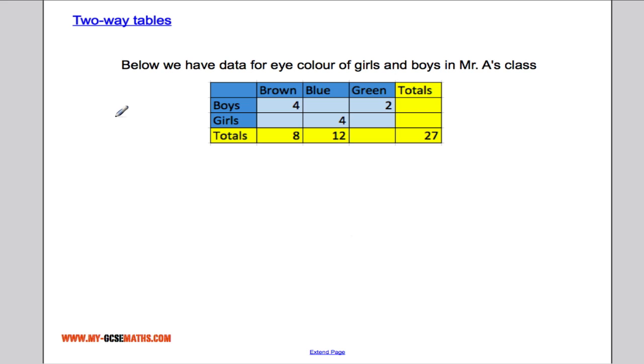Another way sometimes we see two-way tables is like this, where information is left out. And before we should tackle any questions whatsoever, I'm just going to try and fill in the table. Well, if eight people in total have brown eyes, that means, and four of them are boys, that means the other four must be girls.